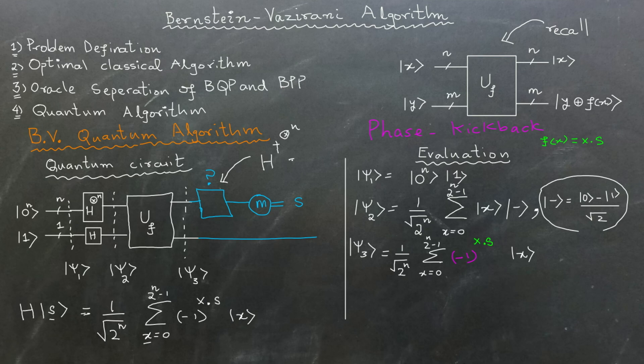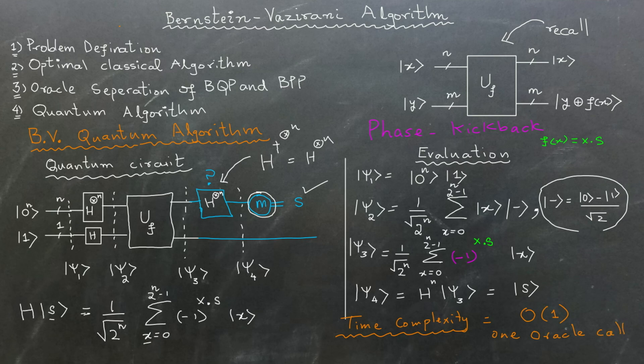However, as the Hadamard gate is its own inverse, we can simply apply the Hadamard gate on ket psi 3. The result of this transformation, ket psi 4, will be ket s. Next, we simply measure it to get our secret message s. That's it. That's our quantum algorithm. The time complexity of this algorithm is O of 1. This is a constant time complexity because no matter the size of input, we will always call the oracle exactly once.